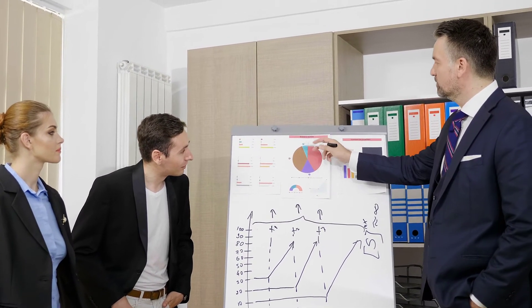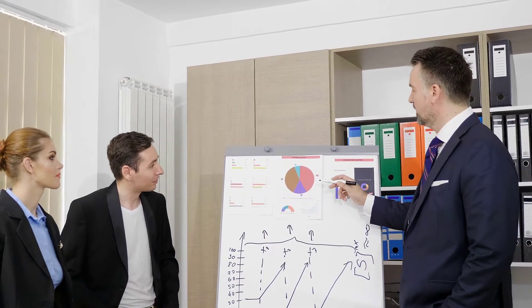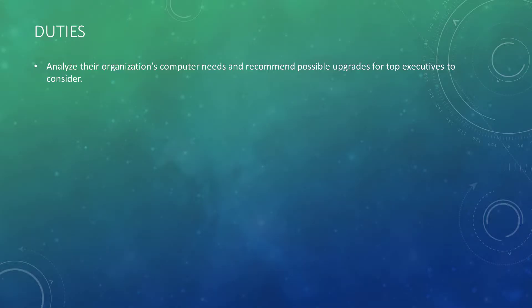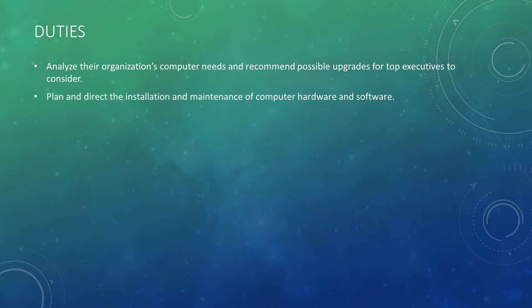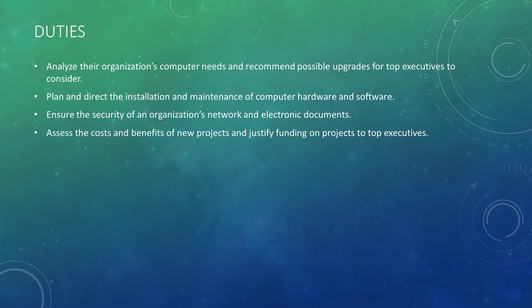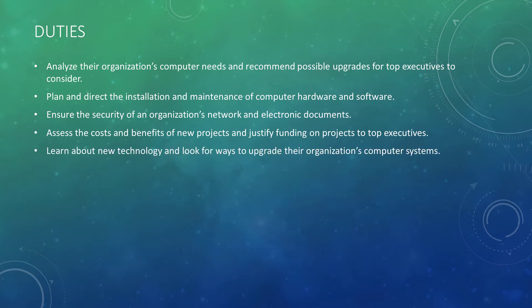Duties: Computer and Information Systems Managers typically do the following. Analyze their organization's computer needs and recommend possible upgrades for top executives to consider. Plan and direct the installation and maintenance of computer hardware and software. Ensure the security of an organization's network and electronic documents. Assess the costs and benefits of new projects and justify funding on projects to top executives. Learn about new technology and look for ways to upgrade their organization's computer systems.